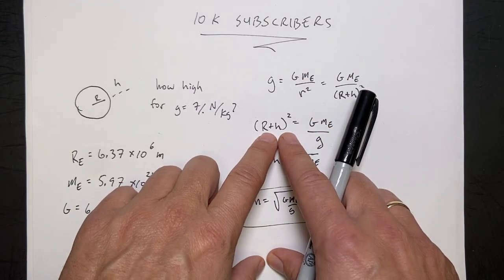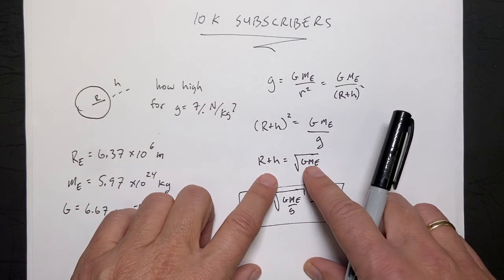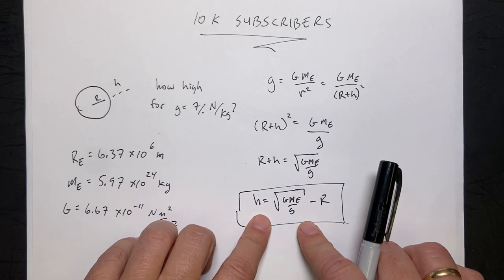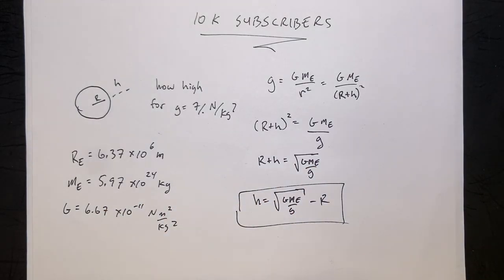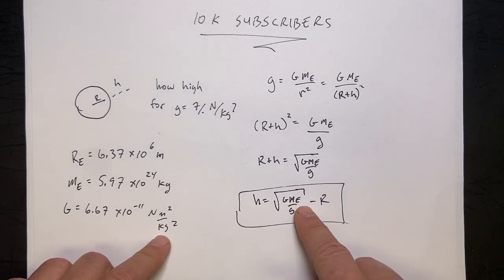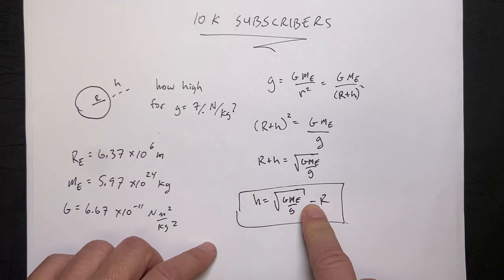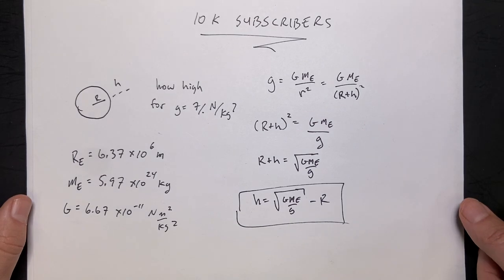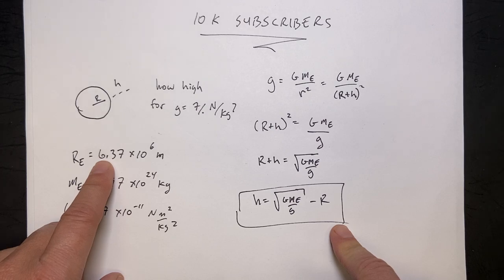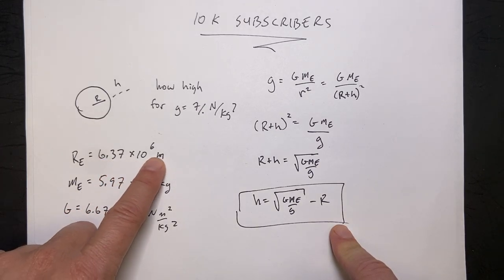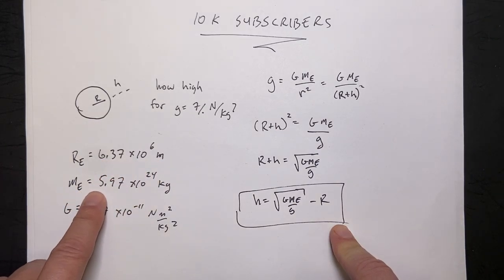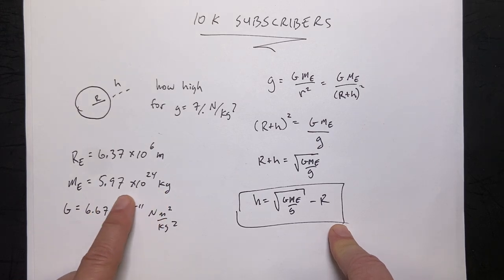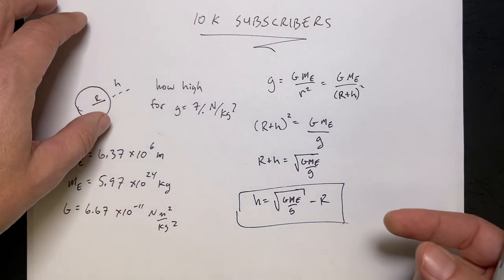Multiply both sides by r plus h squared, divided by g. Take the square root of both sides, and then I can solve for h. Now, I like this problem because number one, G, M_e, and r all have scientific notation, so you have to deal with that. We have multiplication, we have division, and we have the square root. And so I have to do all of that on the slide rule. So here are my values. The radius of the Earth, 6.37 times 10^6 meters. Mass of the Earth, 5.97 times 10^24. G is 6.67 times 10 to the negative 11th.